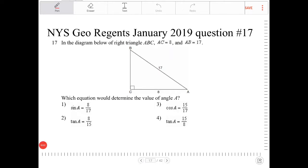In the diagram below of right triangle ABC, AC is equal to 8 and AB is equal to 17. Which equation would determine the value of angle A?